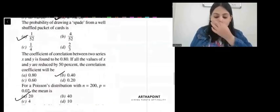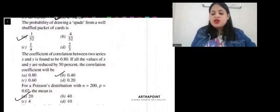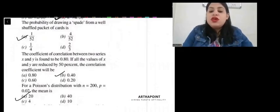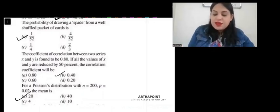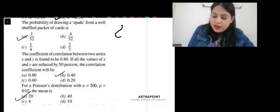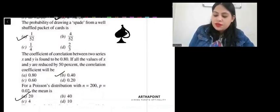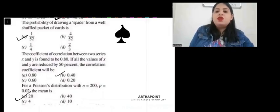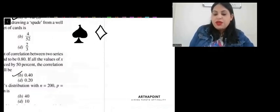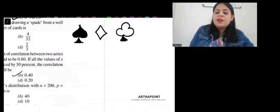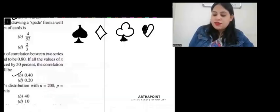Come to the next question. The probability of drawing a spade from a well-shuffled pack of cards? You have to draw a spade. What is a spade? So, spade is basically... when you talk about cards, a spade is looking like this, something like this. This is a spade. So, whenever you talk about cards, you have spade, diamond, and then you have this, and then you have a heart. These four, right?